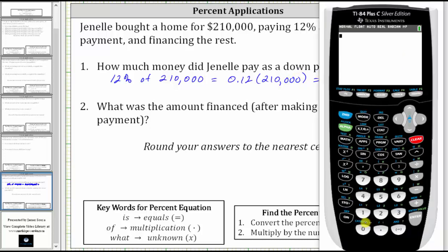Going to the calculator, 0.12 times 210,000 equals 25,200.